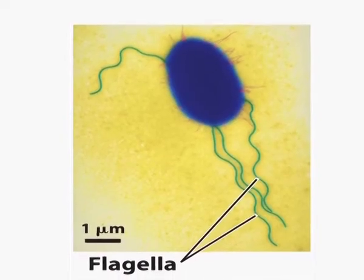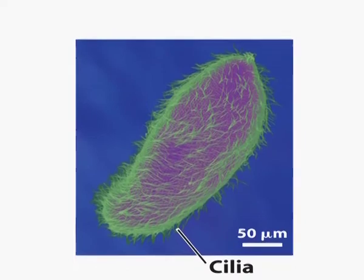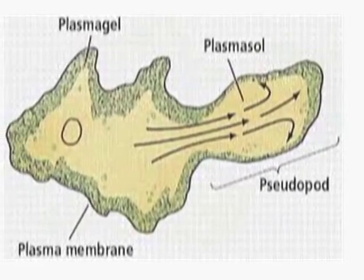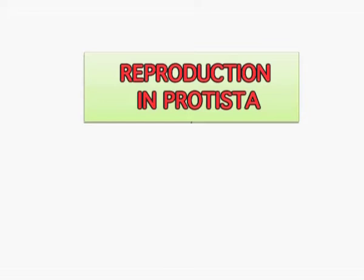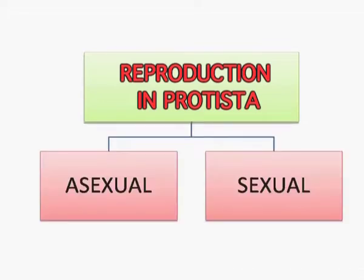Locomotion in these protoctistans is either by flagella, cilia, or pseudopodia, and reproduction is either asexual or sexual. Just like the Monerans, they too have a diversified nutritional mode.